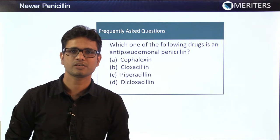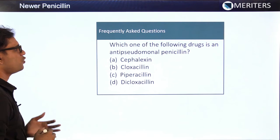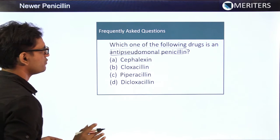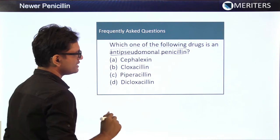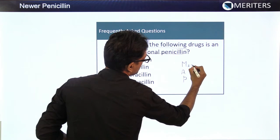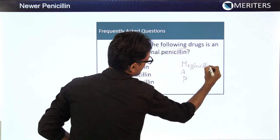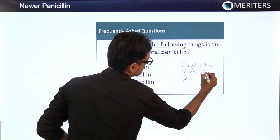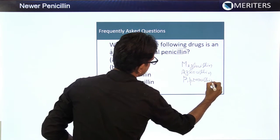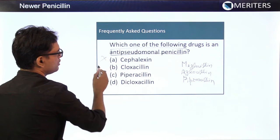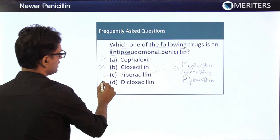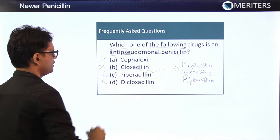For frequently asked exam questions: Which drug is an anti-pseudomonal penicillin? As discussed using the mnemonic, the anti-pseudomonal penicillins are MAP — mezlocillin, azlocillin, and piperacillin. Given options of cefaloxin, cloxacillin, piperacillin, and dicloxacillin, the correct answer is piperacillin, as it appears in MAP.